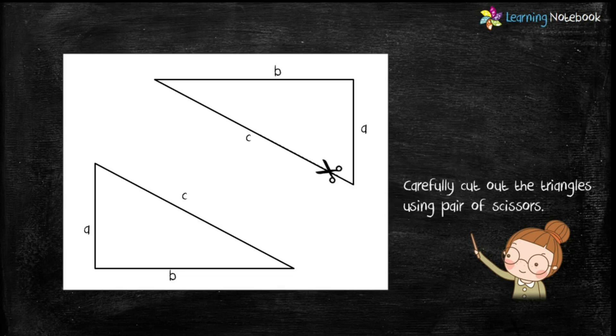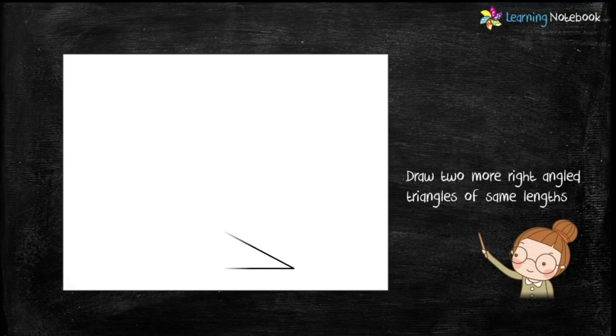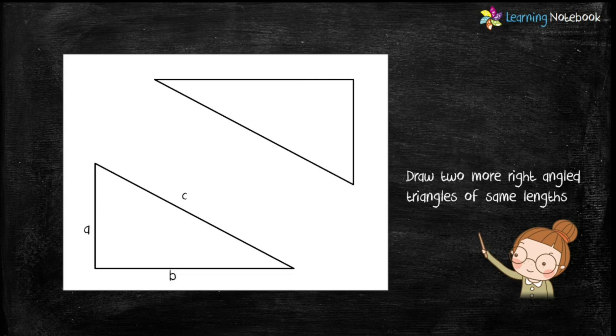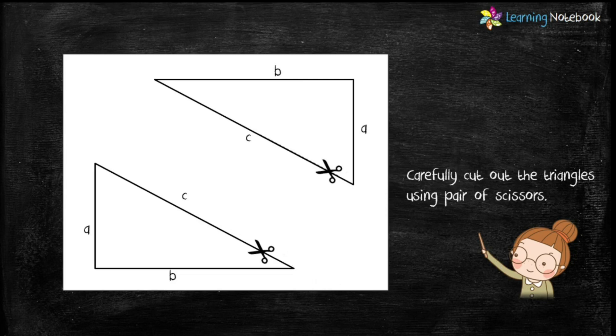Now carefully cut out these triangles with the help of a pair of scissors. Next, take another white sheet and draw two more triangles of the same length. Now carefully cut out these triangles with the help of scissors.